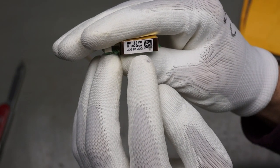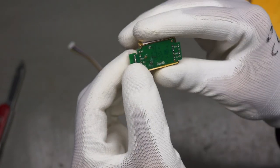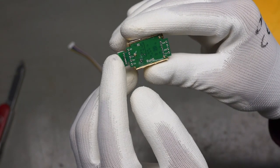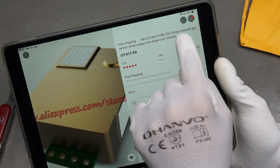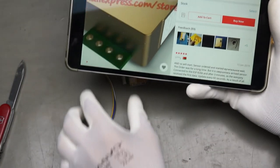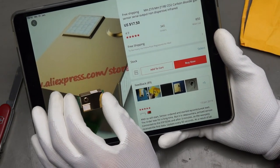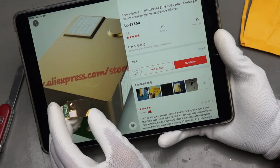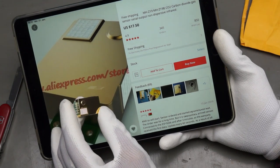0 to 5000 ppm parts per million. So what is this? It has a PWM signal as an output. So let's check. It is a CO2 carbon dioxide gas sensor. And why do I have such a gas sensor?